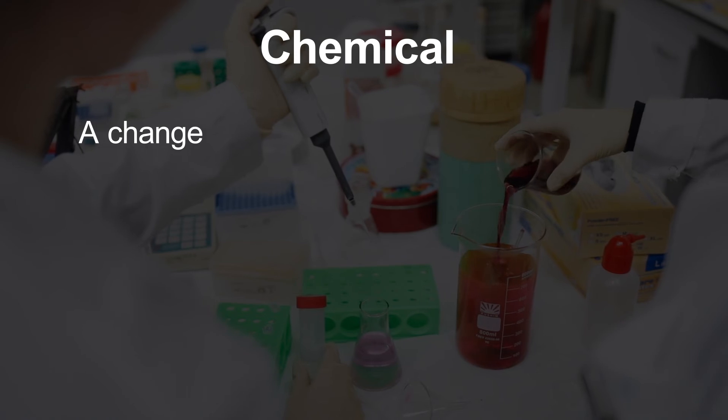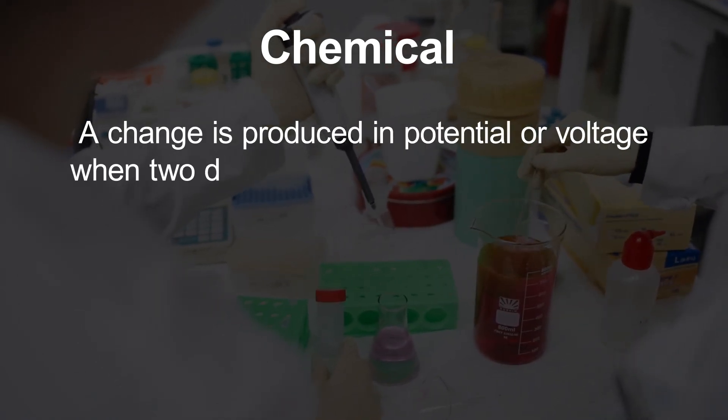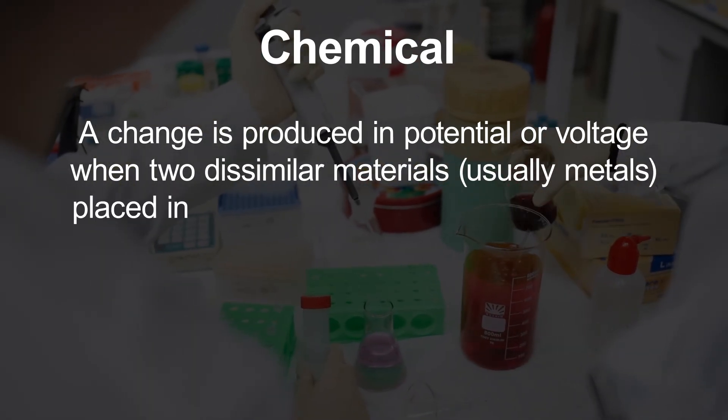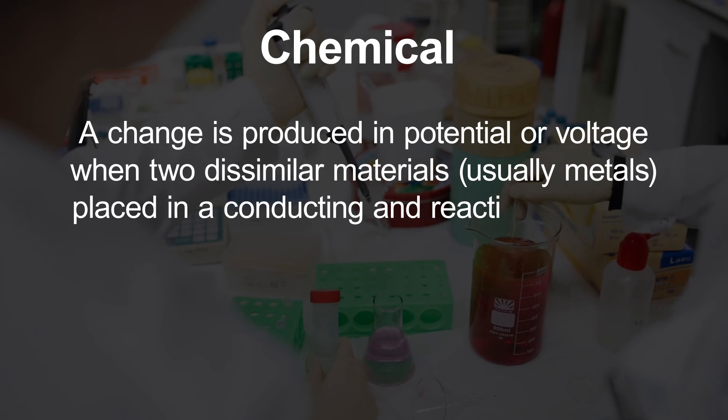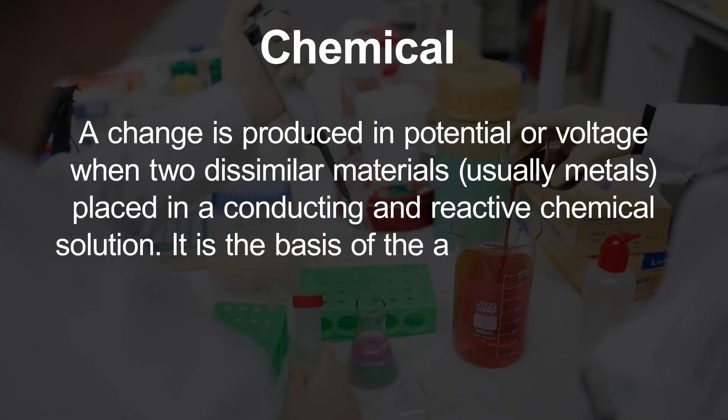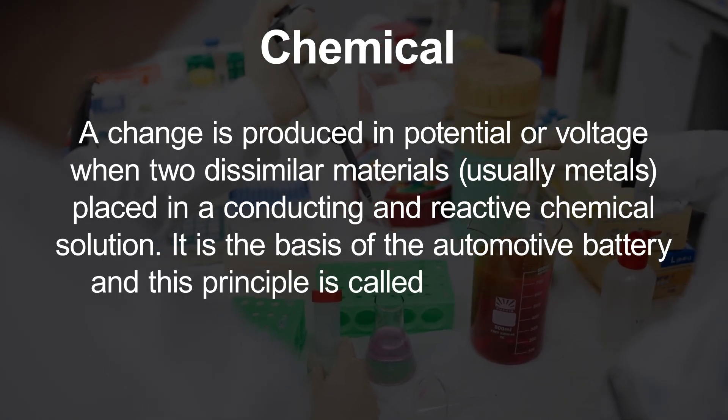Chemical. A change is produced in potential or voltage when two dissimilar materials, usually metals, are placed in a conducting and reactive chemical solution. It is the basis of automotive battery and this principle is called electrochemistry.